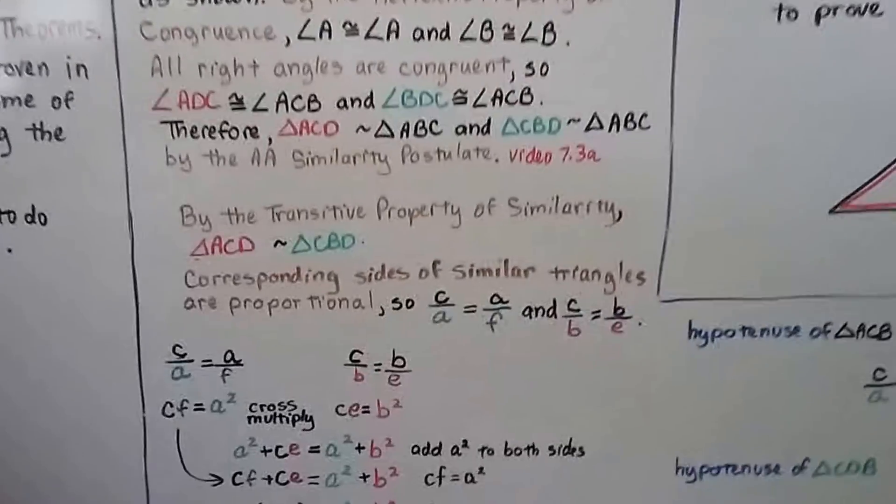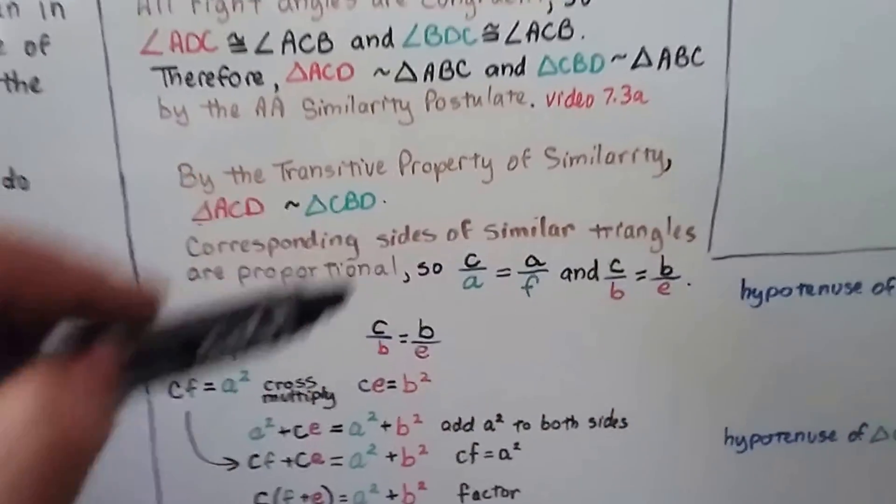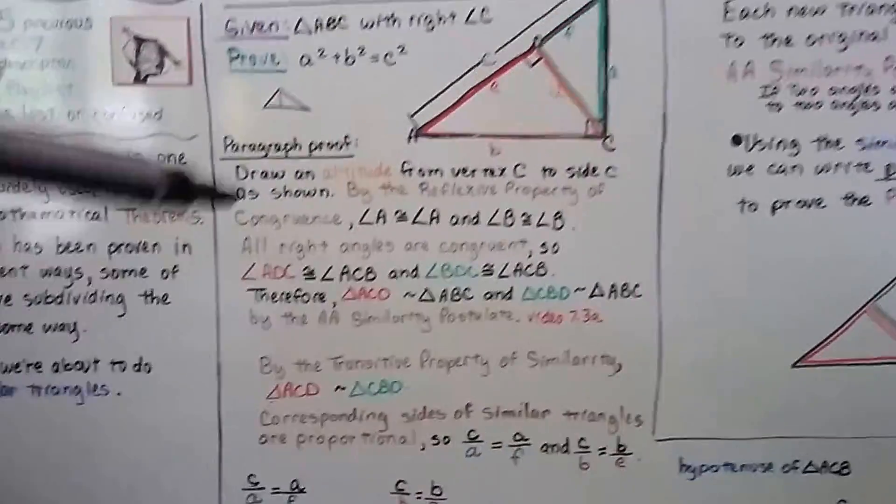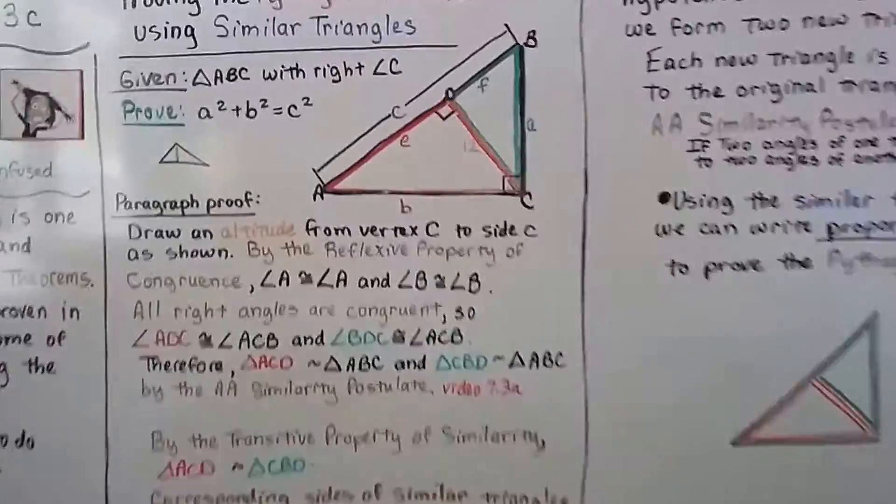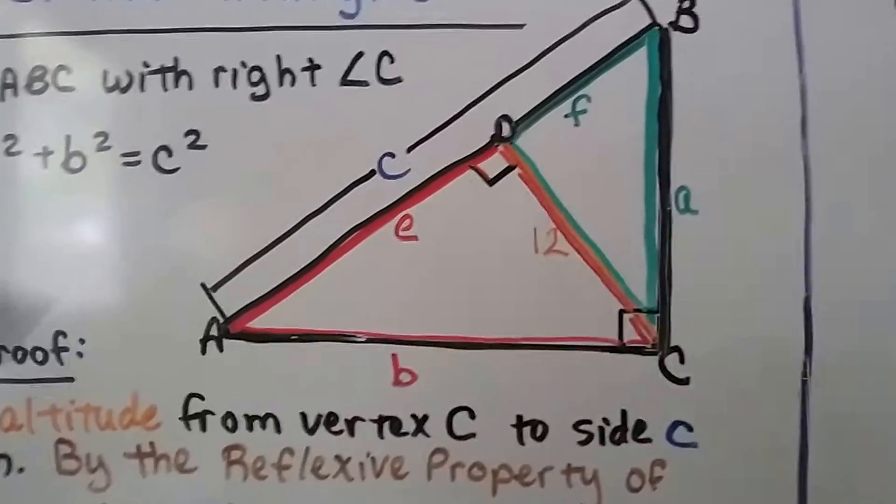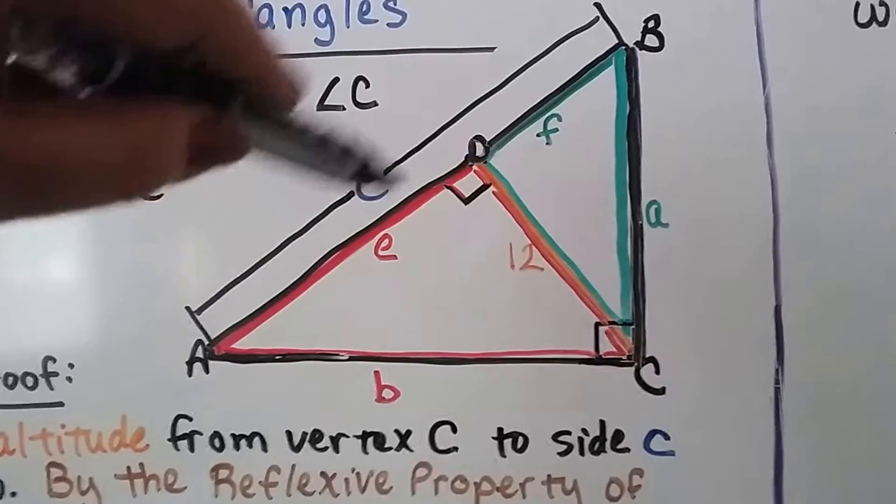And corresponding sides of similar triangles are proportional. So, if you look at this as there's a black line here, but then there's also a red line here. So let me get real close so you can see. So the outer big black triangle is the outer line.